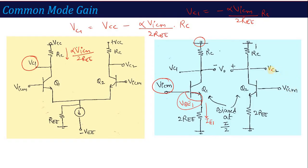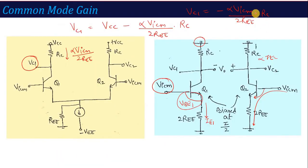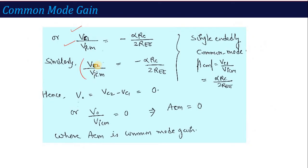Applying KCL at the output node for Q2, IE2 flows, and IC2 equals alpha into IE2. On a similar basis, we calculate VC2. So VC1 divided by VICM equals minus alpha RC divided by 2REE. Similarly, VC2 divided by VICM equals minus alpha RC divided by 2REE. These are the common mode gains when we consider only a single output terminal — the single-ended common mode gain, which equals alpha RC divided by 2REE.